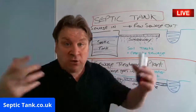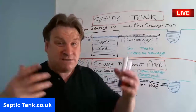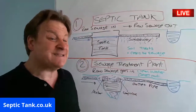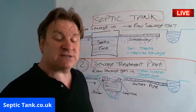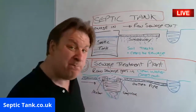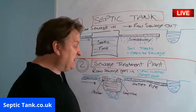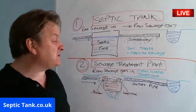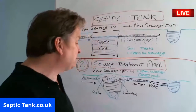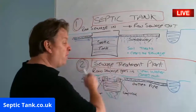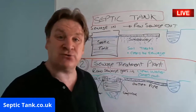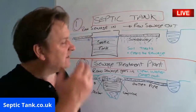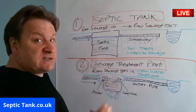With a sewage treatment plant, you've got compressors, motors, pulleys, belts, shafts, cogs, electricity, pipes and wires — yes, they use electricity and are expensive to run every year. But they turn raw sewage into clean water that can discharge directly into a water course. So if you live near a water course, you'd go for a sewage treatment plant because you're not polluting the environment.